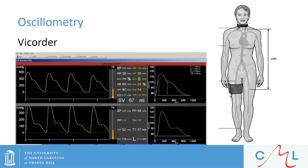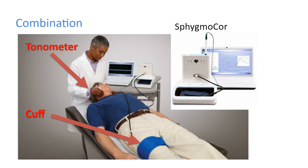Here is an example setup for the Vicorder, which is an oscillometric device. Here we see another device by AtCor called the Xcel, which combines tonometry — that pen-like pressure sensor — as well as the oscillometric component, which is a cuff placed around the thigh. We can also use ultrasound to assess pulse wave velocity, measuring the velocity waveform at proximal and distal sites and gating it to the ECG to determine the transit time.